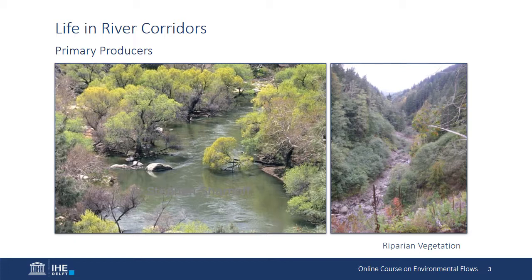Riparian vegetation is a final group of primary producers important to stream and river corridors. Like algae and macrophytes, riparian trees, shrubs, and herbs are important basal food sources to aquatic ecosystems, providing energy in the form of leaves, branches, and trunks falling into rivers and streams. Riparian vegetation is also important for stabilizing river banks and providing habitat to a wide range of animal species. Riparian plants may also be of special value to humans, providing food, fiber, or medical compounds.